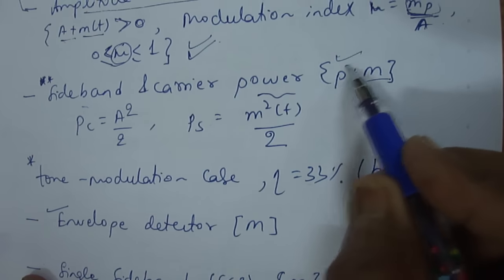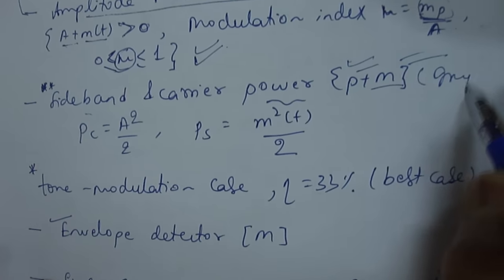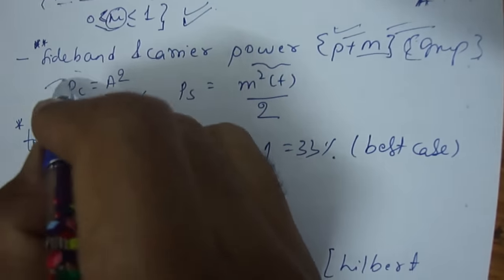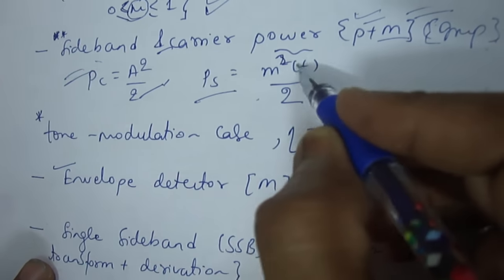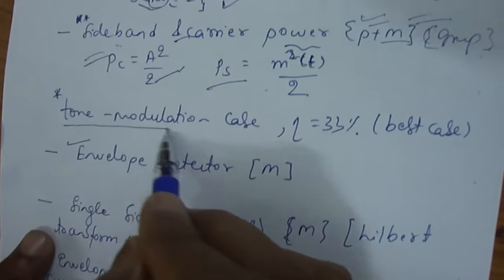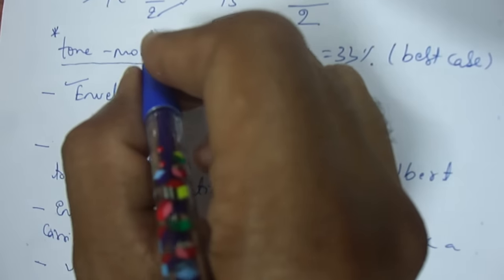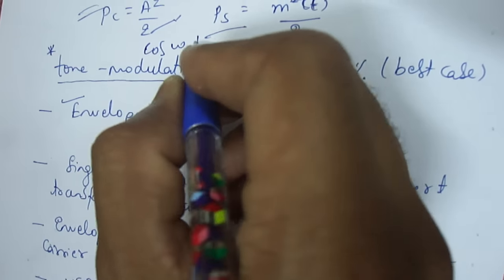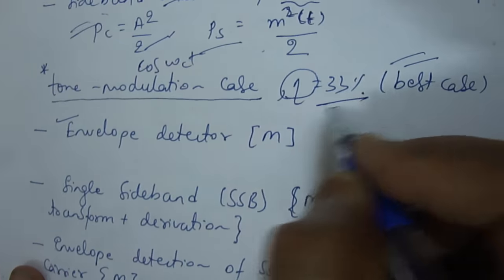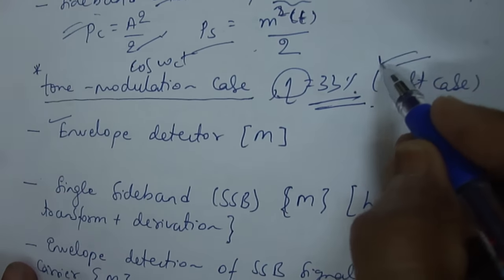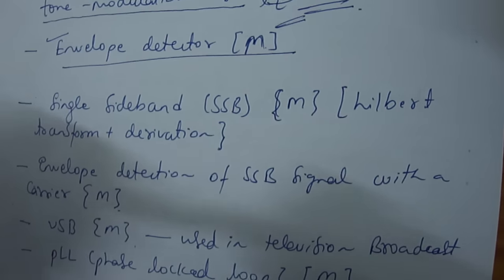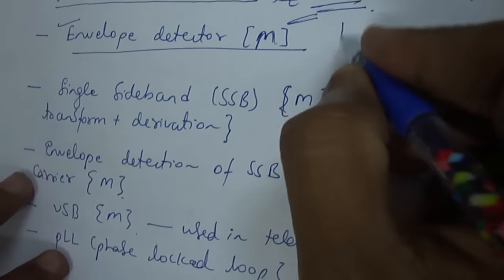Sideband and carrier power is very important for both prelims and mains. Given any message signal or function representing an amplitude-modulated wave, you need to find the sideband and carrier power. Carrier power will be A² / 2, and sideband power will be the mean square value of the message signal — M² / 2. Then there is the special case of tone modulation, where the message is also a sinusoid: A·cos(ωc·t). In that case, the best-case efficiency of 33% can be achieved. The envelope detector is important basically for mains — you can be asked for the full block diagram in a 10, 12, or 15 mark question.